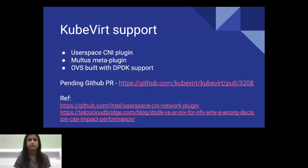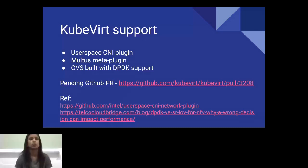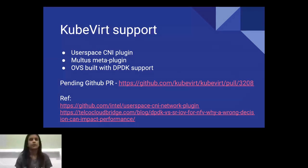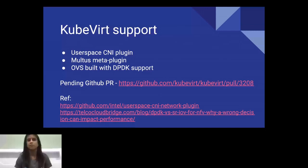KubeVirt's OVS-DPDK support is not yet upstream in the latest version. We tried this using an older pull request by Sriramanan from Red Hat and cherry-picked those changes onto the latest KubeVirt, which worked with KubeVirt VMs. Instead of the SR-IOV device plugin, you use a userspace CNI and the Multus meta-plugin for attaching secondary interfaces to VMs. The OVS packages on your nodes need to be DPDK-compatible, available via different build settings or OVS repo.